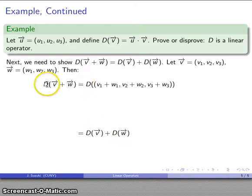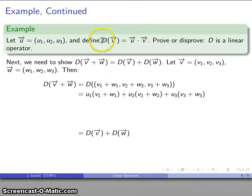This is going to be D of v + w. That's a vector addition, so I can add the vectors component-wise. My definition says if I apply D to a vector, it's the dot product of that vector with my predefined vector u. So there's my dot product.